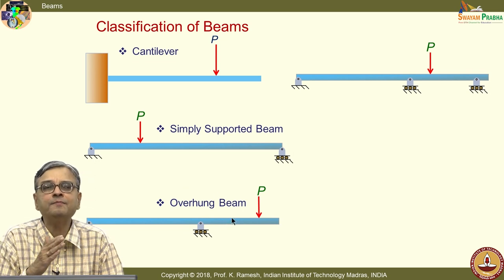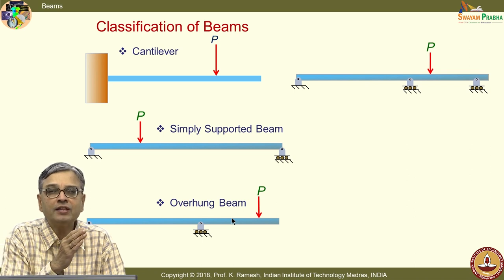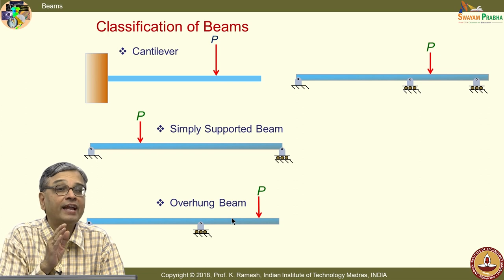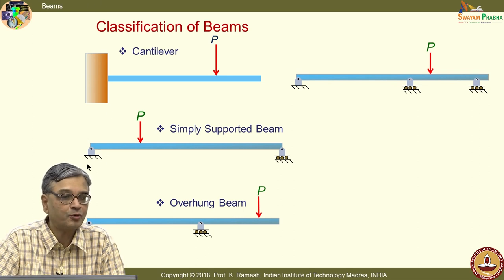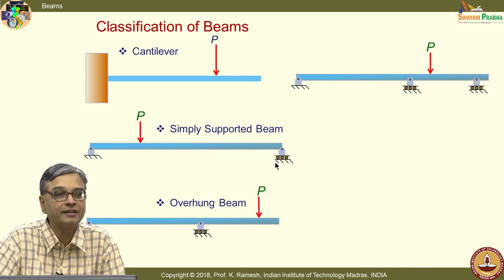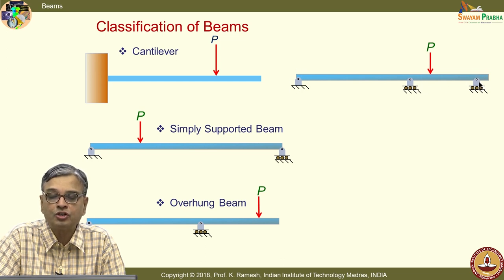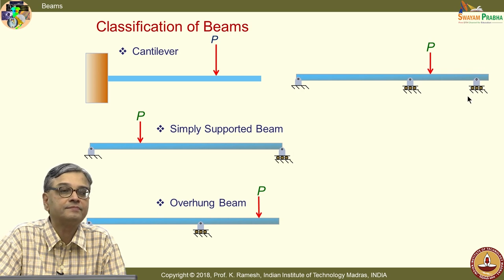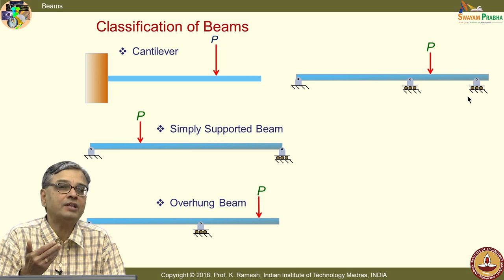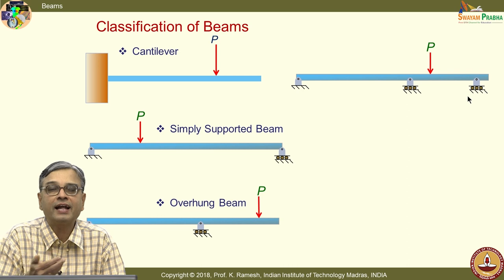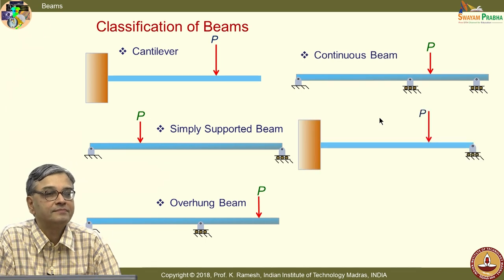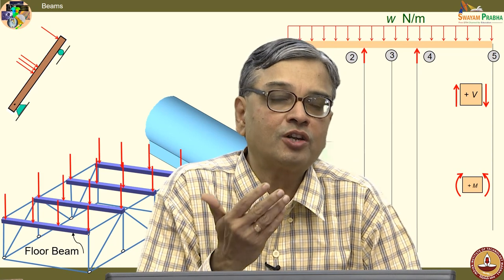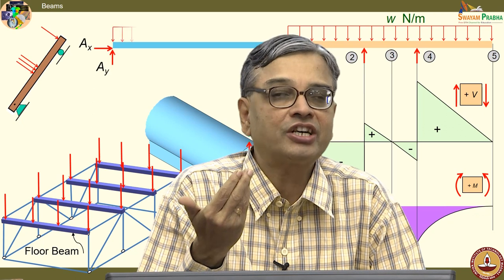There are different names given to beams based on the way supports are located and how the supports are made. I have a fixed support, a hinged or pinned connection, and a roller support in various configurations. When I have many supports, people call this a continuous beam. For every type of beam, you can always find a practical structure around you — only then will you learn engineering.